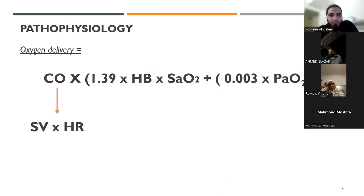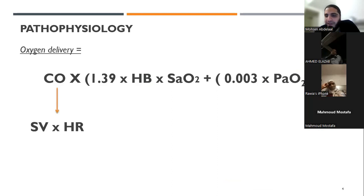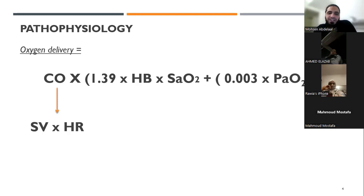The pathophysiology starts with the oxygen delivery equation — it's important to know the factors affecting oxygen delivery to the tissues, because that's how you differentiate what you need to do next. Looking at the equation, it starts with cardiac output multiplied by several fixed and variable numbers. Because it's the first number, it has the biggest impact on oxygen delivery.